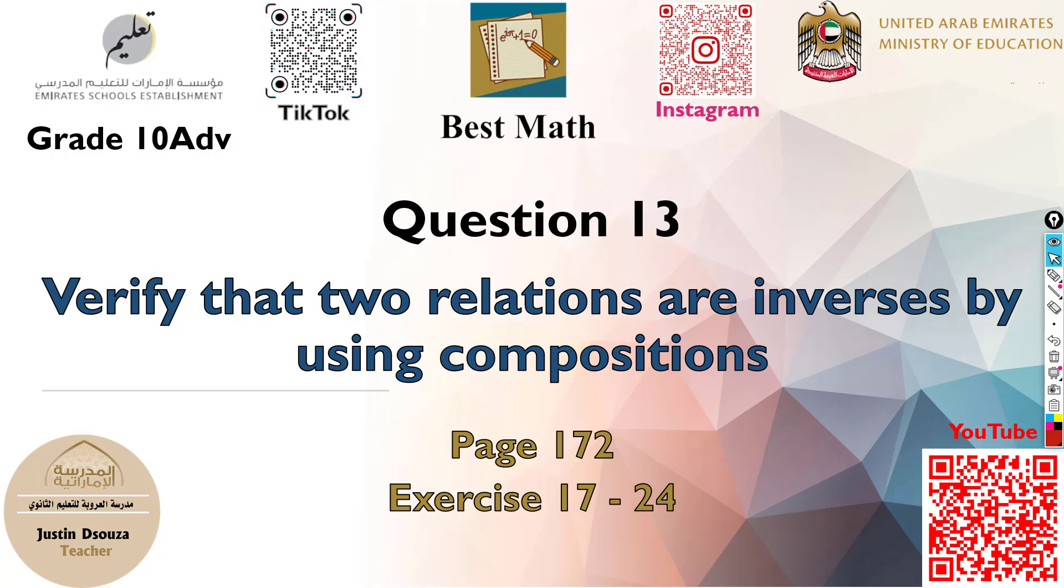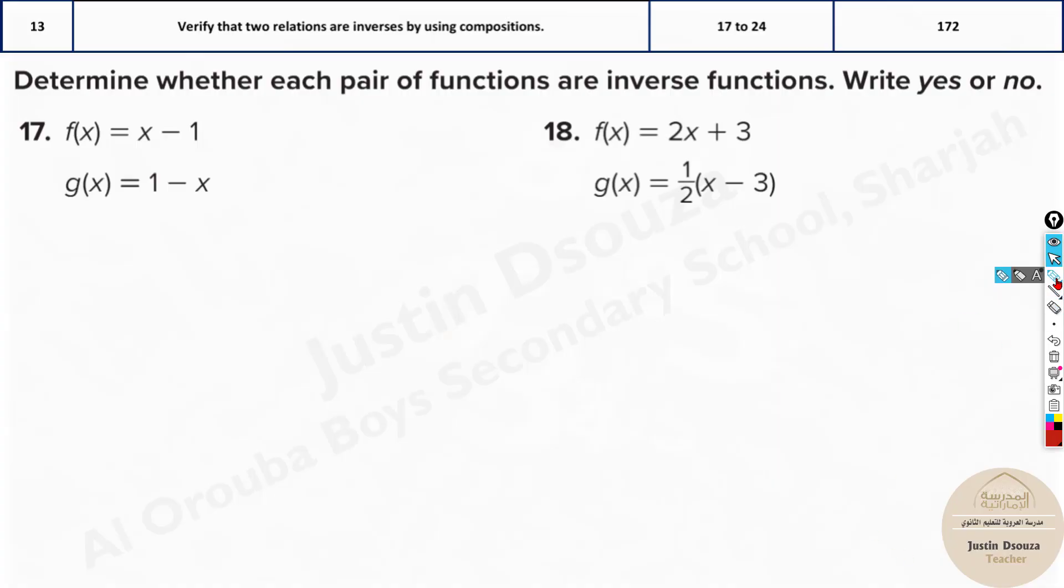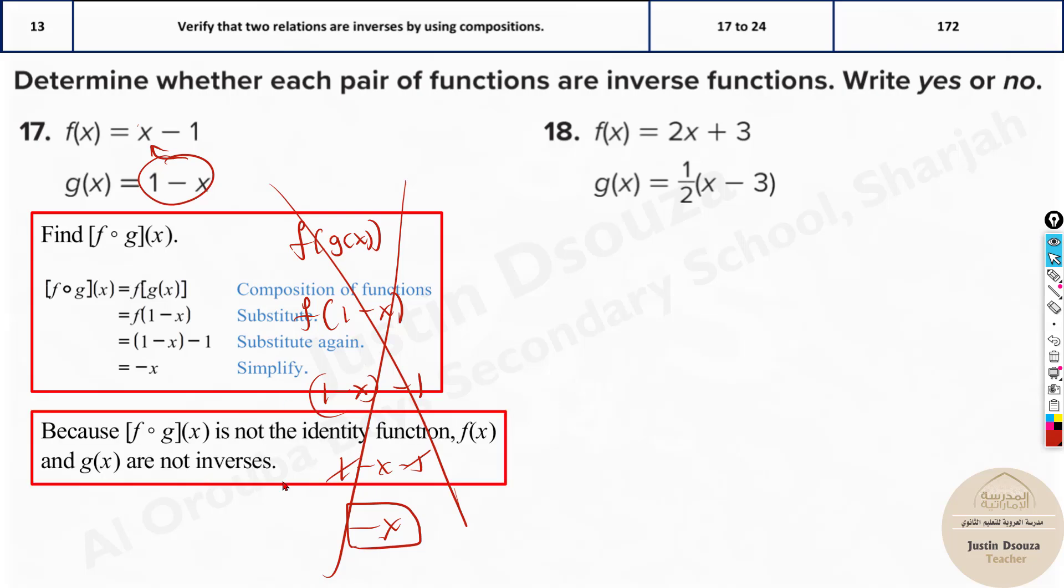Question 13 asks to find whether two relations are inverses by using composition. Here you have been given two functions f(x) and g(x). They're both inverse of each other when you compose f(g(x)) and you get equal to x. So we must get x. Let's look into this. It's very simple. All you do is compose them f(g(x)) and solve it. What is g(x) given as? 1 minus x. So the function f(x) is x minus 1. But instead of x, I have to put this. So it will be 1 minus x minus 1. When you solve it up, 1 minus x minus 1, the 1 cancels but this is negative x. So they are not inverse. This is not inverse of each other.